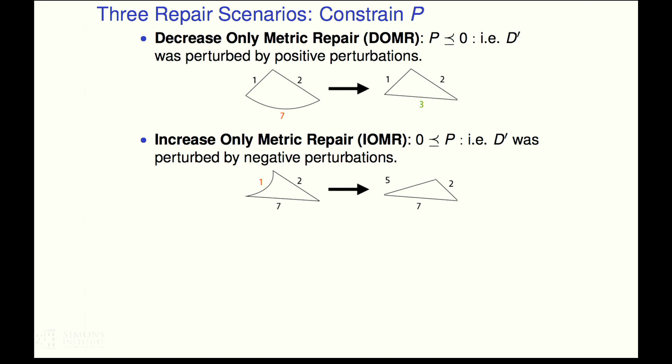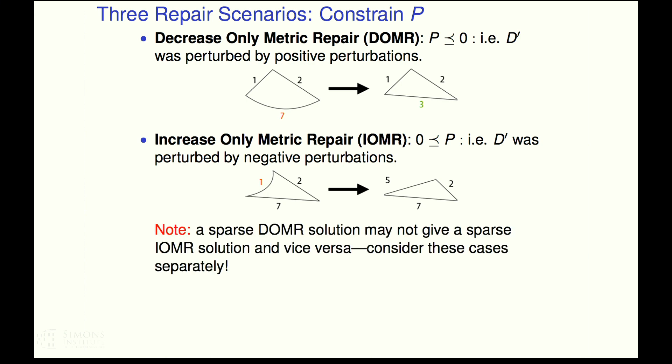With the same triangle, one, two, seven, we could do an increase only metric repair. In other words, we constrain ourselves to only increasing distances that we think are incorrect. So change the one there to a five to make a proper triangle. And notice, it's the same triangle, one, two, seven. A sparse decrease only metric repair solution is not necessarily the same as the sparse increase only metric repair solution. And furthermore, I mean in this example, the sparsity is one for each one. But that need not be the case in more general situations. So we should consider these two situations separately.